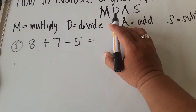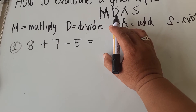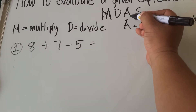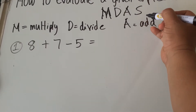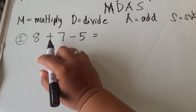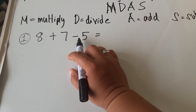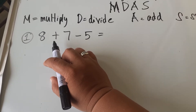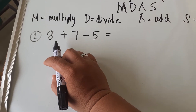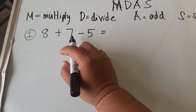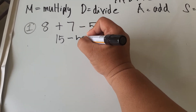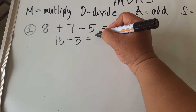If we have 8 plus 7 minus 5, using M-DAS how can we evaluate this expression? Since we are going to evaluate addition or subtraction, and add comes first before subtraction, we add before we subtract. So 8 plus 7 is equal to 15, then 15 minus 5 is equal to 10.